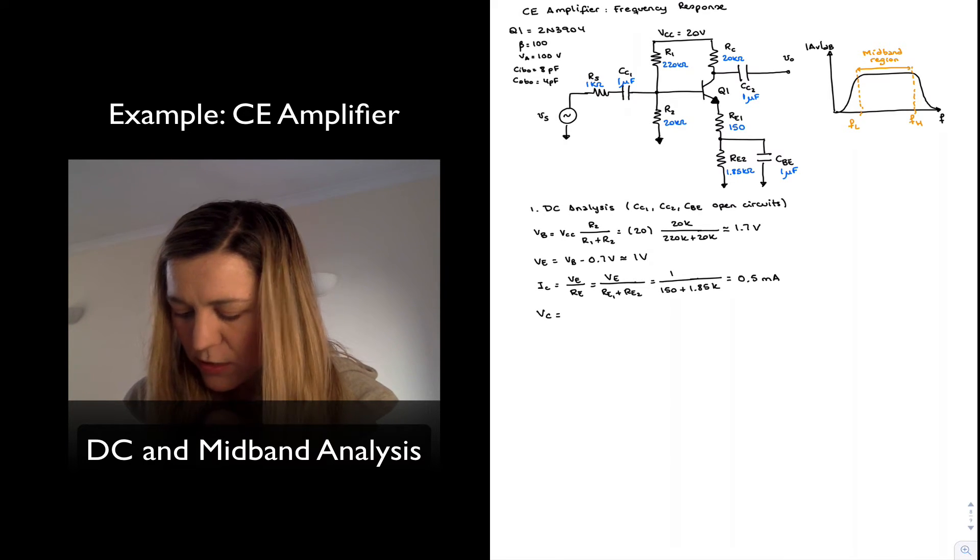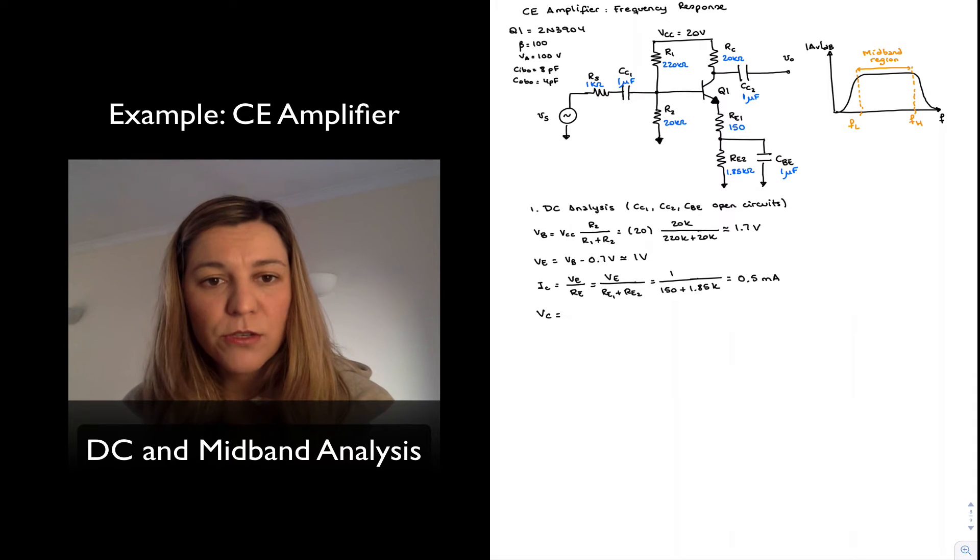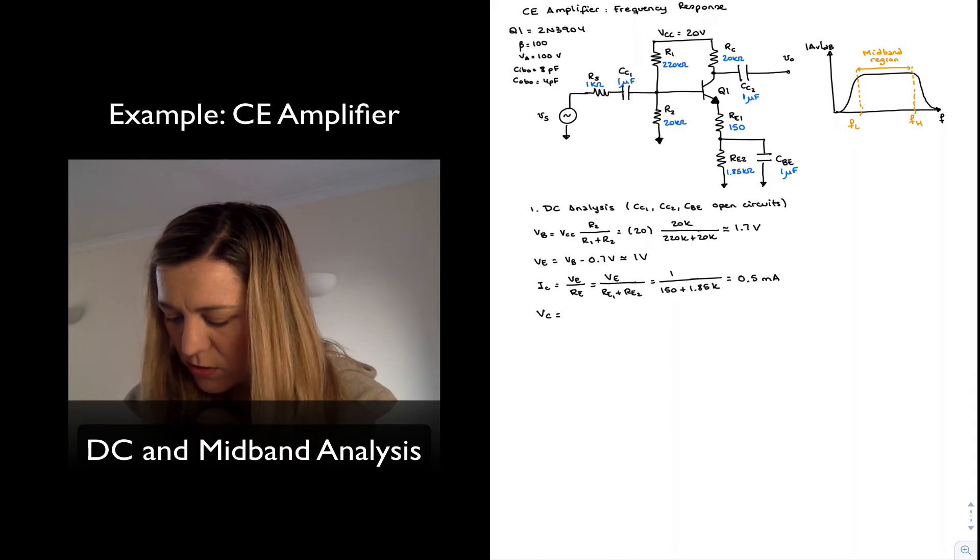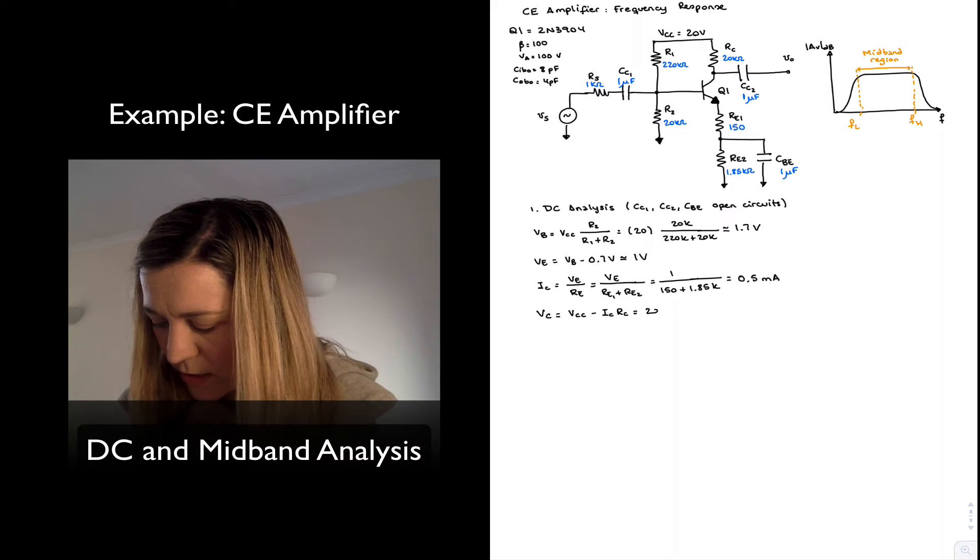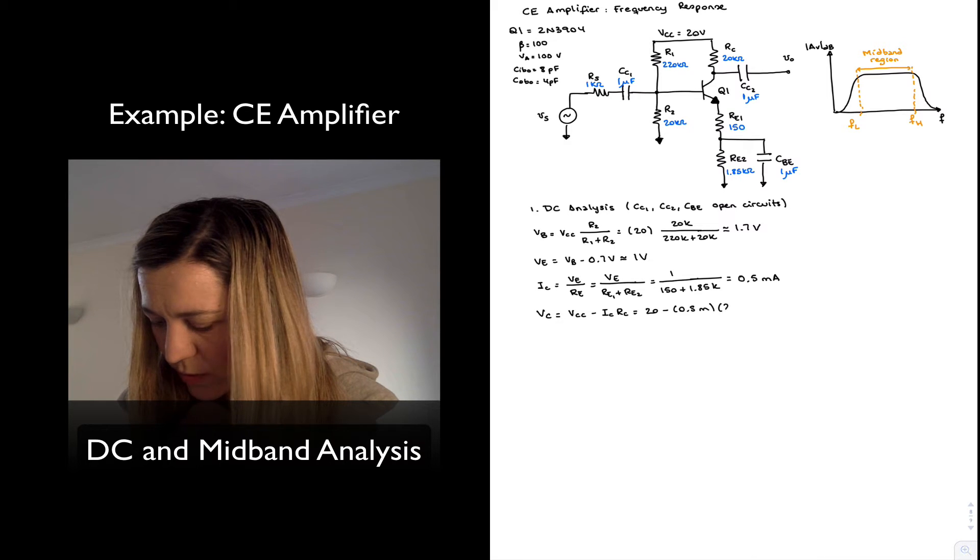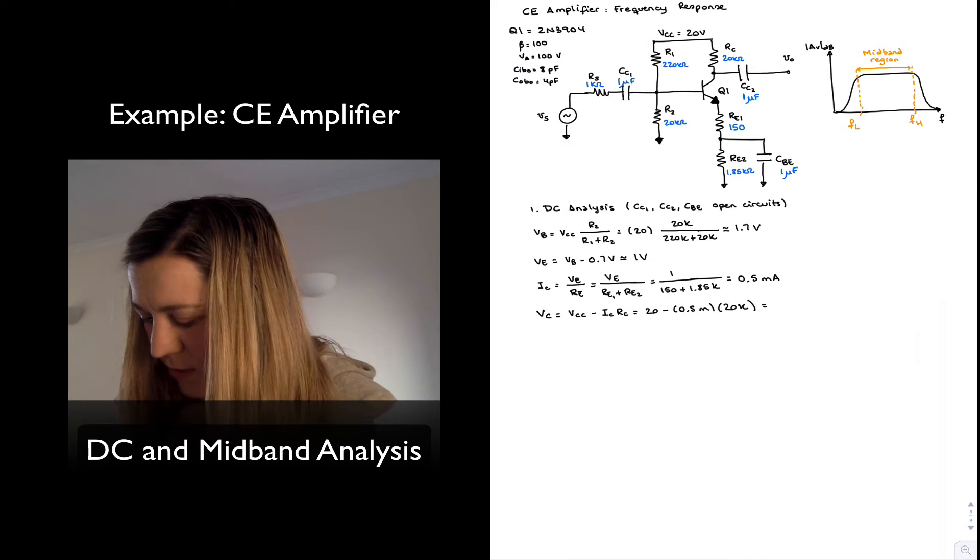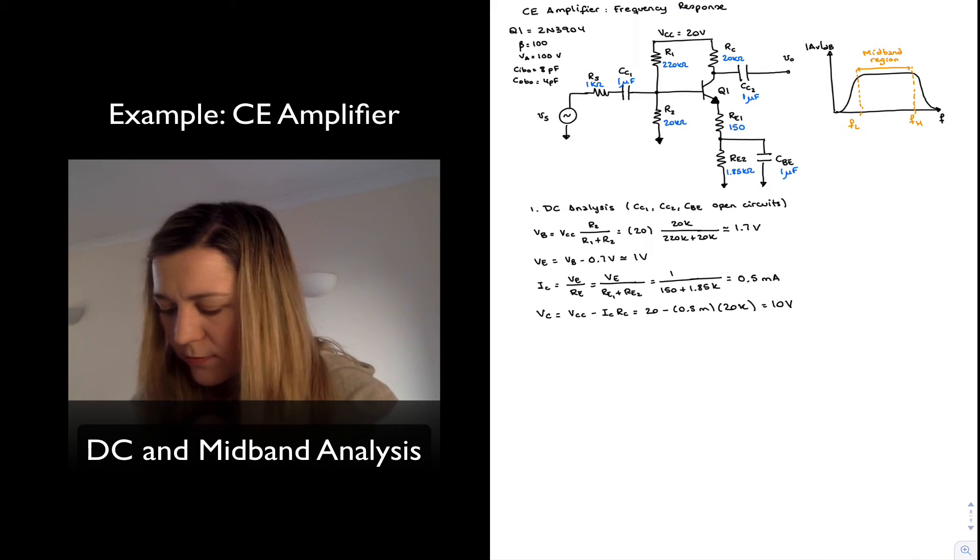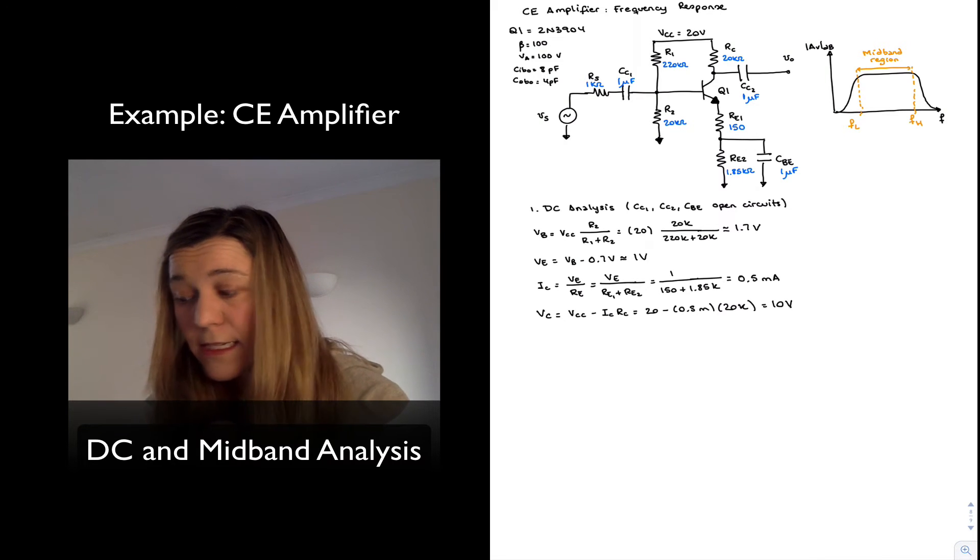And finally, my collector voltage is going to be equal to VCC minus the voltage drop across resistor RC. So it's just going to be VCC minus ICRC or 20 minus 0.5 mA times 20K, which is 10V. So that's my DC analysis.